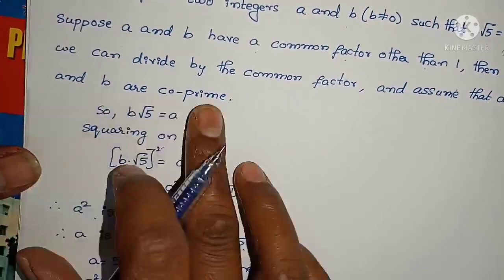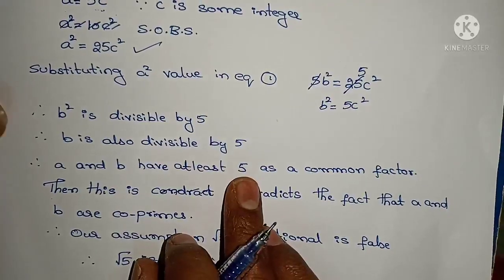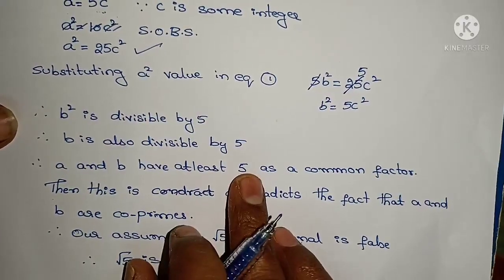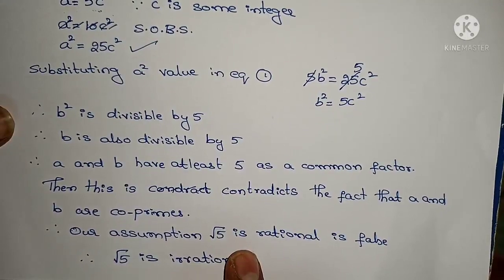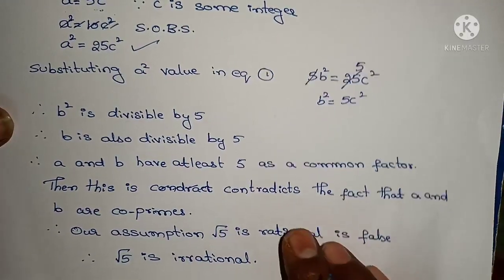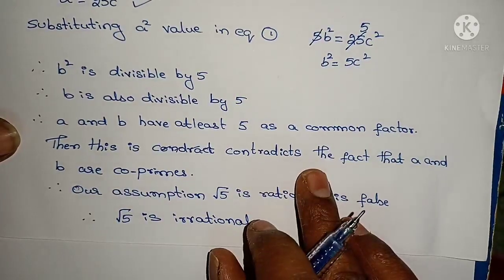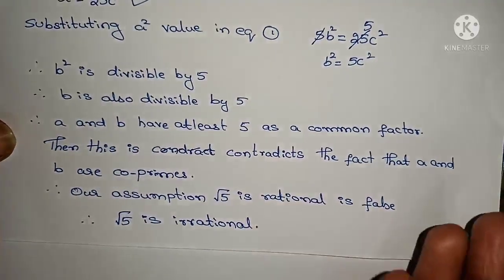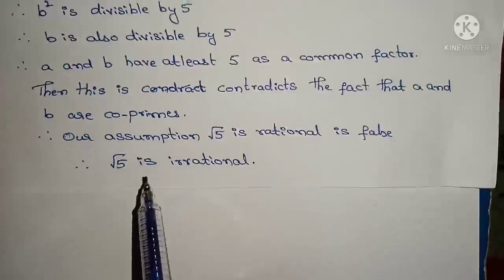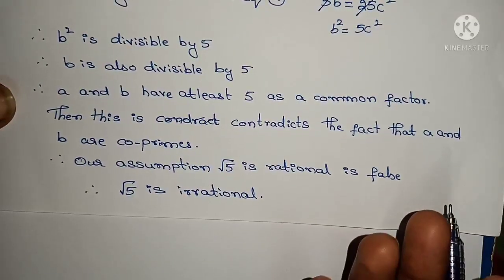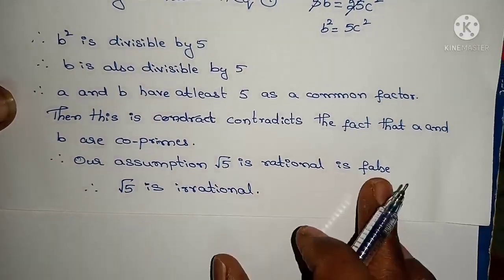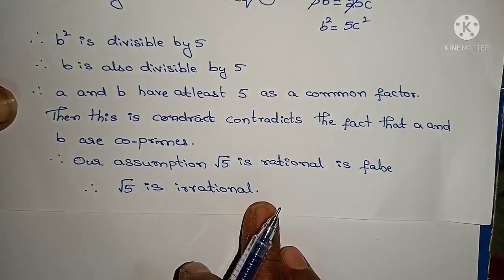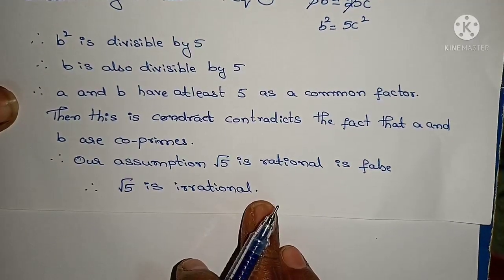But we had assumed that a and b are co-primes. Here we are getting 5 as a common factor for both a and b — that is a contradiction. So the contradiction means it is a false statement. Therefore our assumption that root 5 is rational is false, and therefore root 5 is irrational.